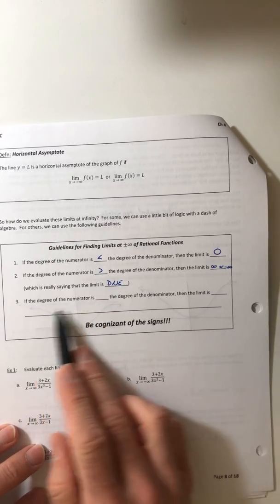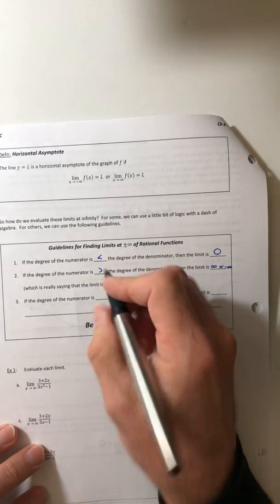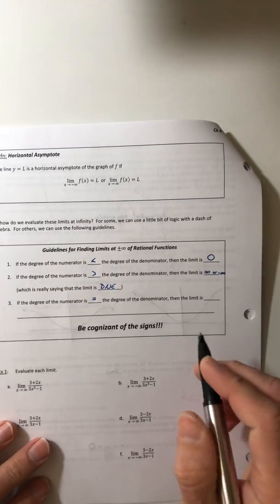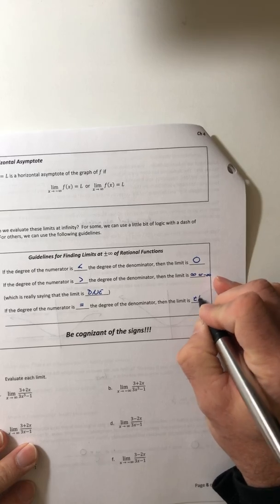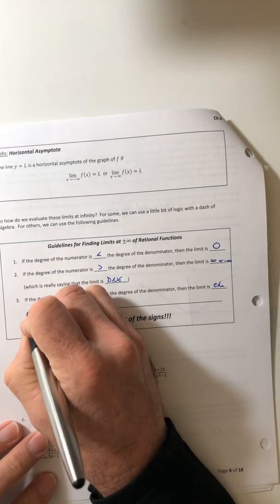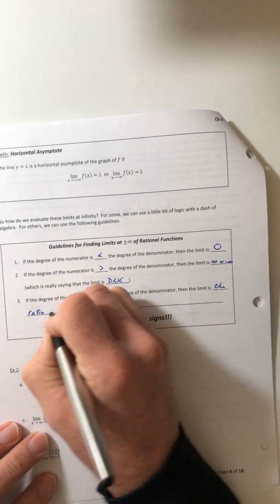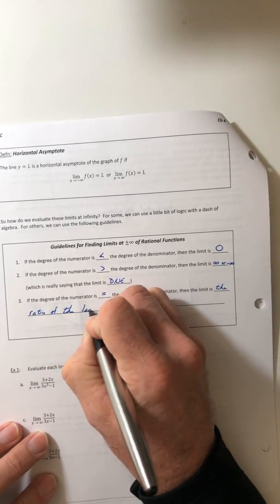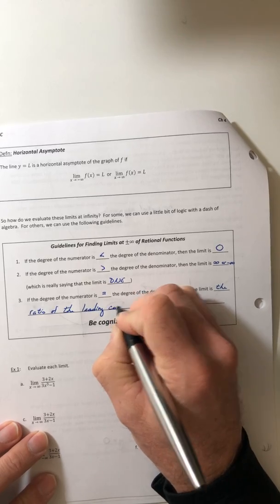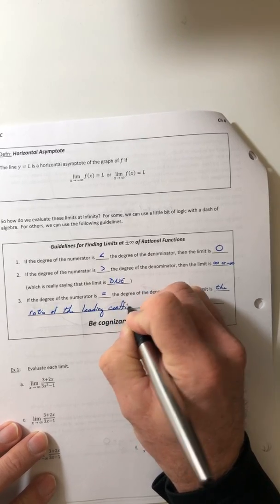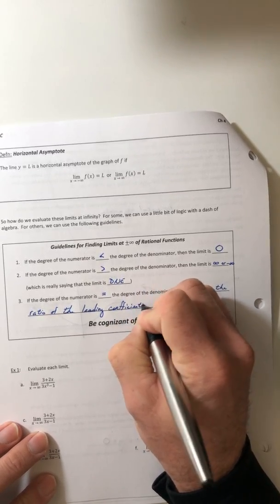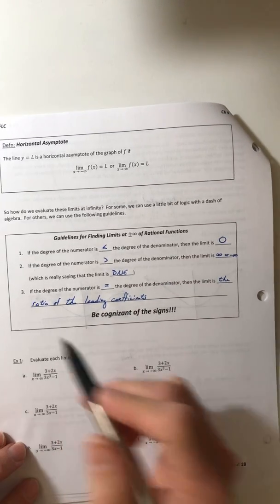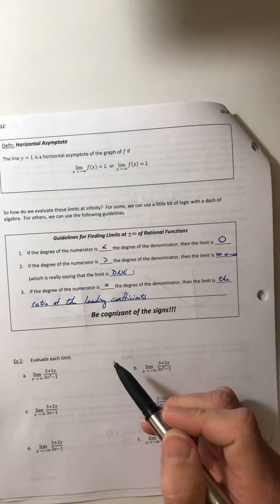Okay, so then there's a third case. And that's when the degrees are equal. So then the limit is the ratio of the leading coefficients. So the coefficient, that's the coefficient in front of the term where you get the degree.